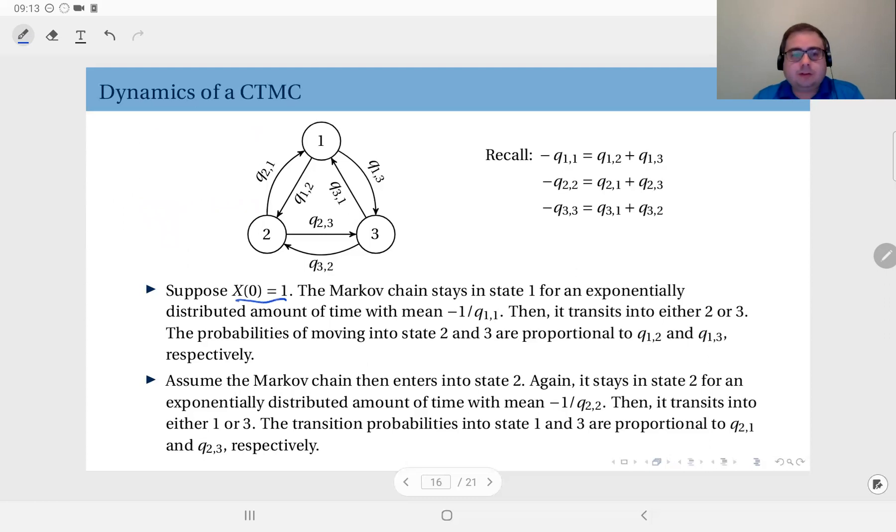Suppose that X(0) equals 1, that means I'm starting at state number 1. At time 0, I'm here. So I'm going to stay in state 1, and remember the holding time is exponential. So I'm going to stay in state number 1 for a random time whose distribution is exponential, and the rate parameter of that distribution is minus Q 1 1. This is equal to the sum of the rates going out of state 1, Q 1 2 and Q 1 3. Now, the Markov chain is going to stay in state 1 for an exponentially distributed amount of time with mean 1 over minus Q 1 1.